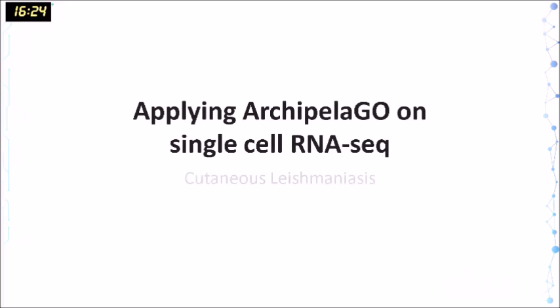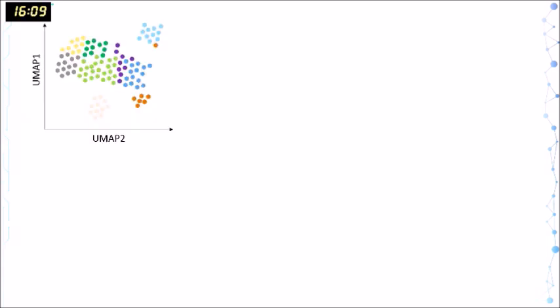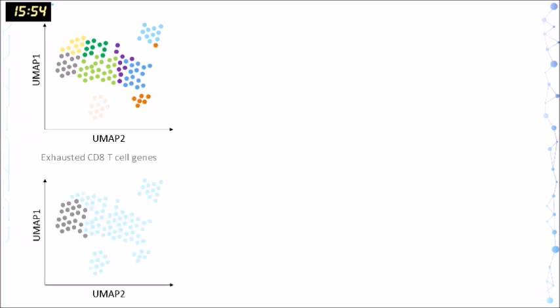So that is the Archipelago. But then we also had the idea of applying Archipelago to single cell data even if you don't have the spatial information. So we generated a cutaneous leishmaniasis data set, single cell from the skin of patients, and then we faced several problems. So this is not a spatial data. You know UMAP, right? So you can do dimension reductions and then cluster and then you identify these colored clusters here.